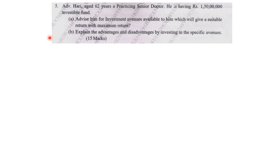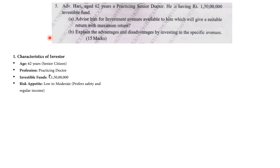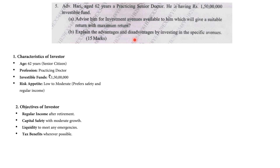First, explain the characteristics of the investor. Second, the objective of investing in different avenues. Third, give them a portfolio of avenues and explain the merits, demerits, and meaning of each avenue. Lastly, give a conclusion. So, number one: characteristics of investor — he is age 62, a senior citizen, a practicing doctor. His fund is ₹1.5 crores and his risk appetite is low to moderate, so he prefers safety and regular income.